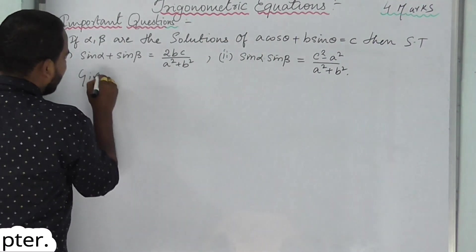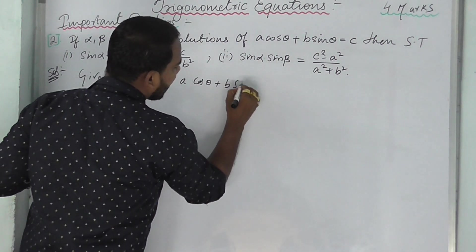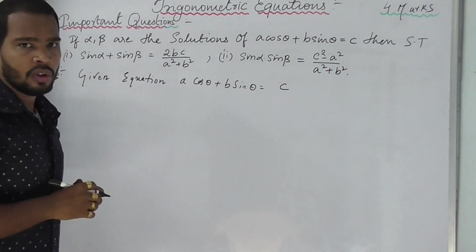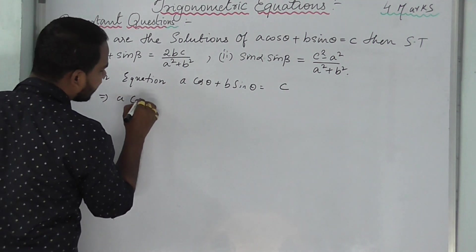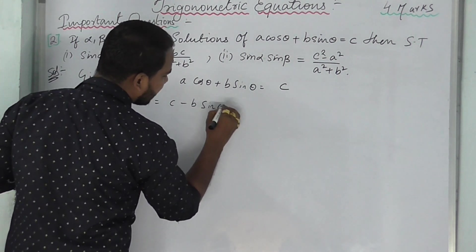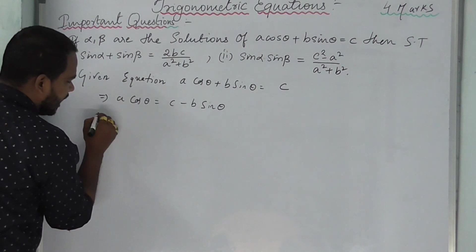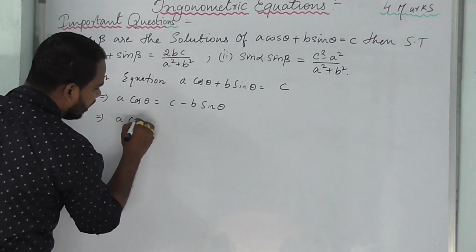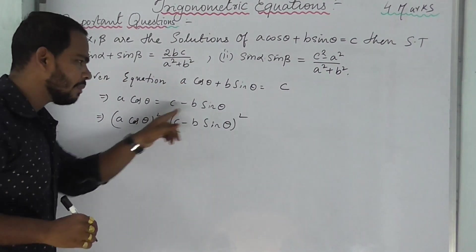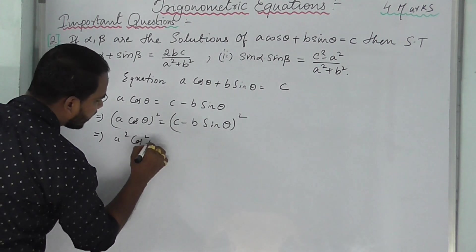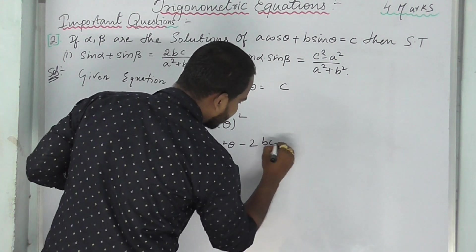Now the second question: given the equation A cosθ plus B sinθ equals C, where alpha and beta are roots, find sin alpha plus sin beta and sin alpha into sin beta. First step: write cos θ equals C minus B sinθ divided by A — that is, bring B sinθ to the RHS. Now squaring both sides: A² cos²θ equals (C minus B sinθ)², which expands to C² plus B² sin²θ minus 2BC sinθ.